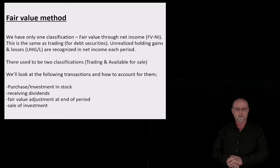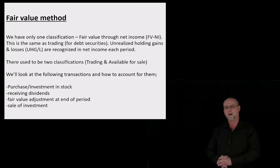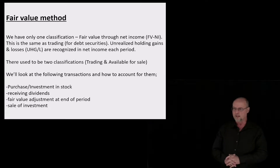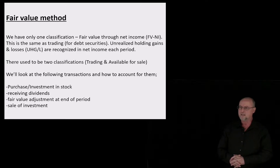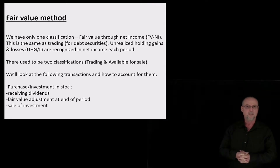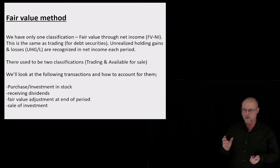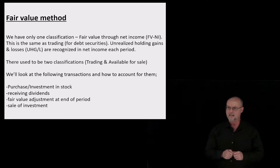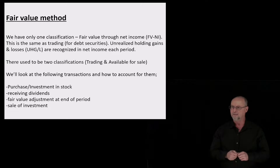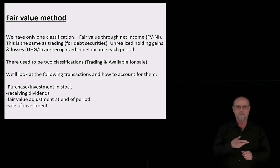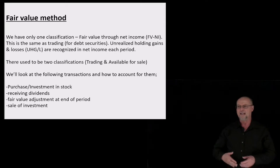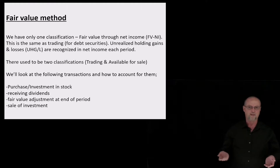The good news here is unlike debt securities, we only have one classification, and that is what we call fair value through net income — which is the same conceptually as trading securities for bonds, debt securities. There used to be trading and available for sale. They decided to get rid of the available for sale classification and only use trading, but they changed the name to fair value through net income.